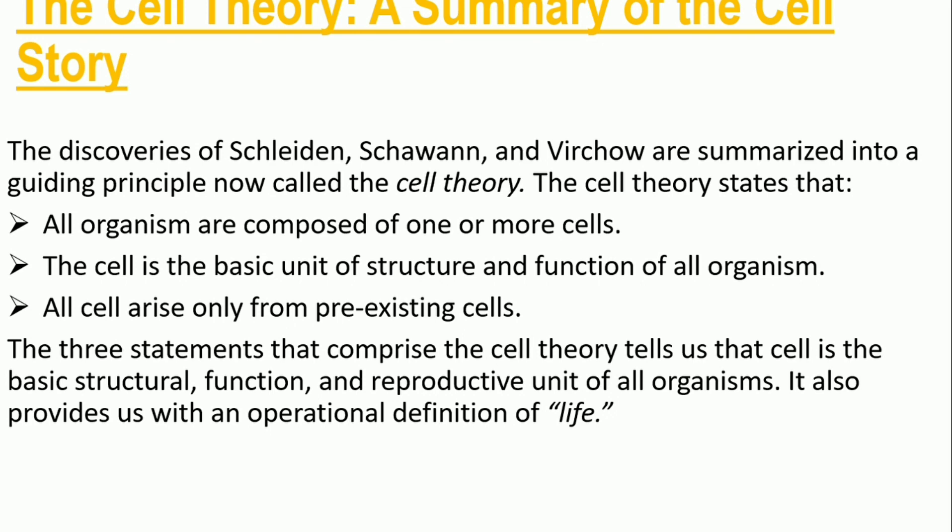The discoveries of Schleiden, Schwann, and Virchow are summarized into guiding principles now called the cell theory. The cell theory states that all organisms are composed of one or more cells, the cell is the basic unit of structure and function of all organisms, and all cells arise from pre-existing cells. The three statements that comprise the cell theory tell us that the cell is the basic structural, functional, and reproductive unit of all organisms. It also provides us with an operational definition of life.